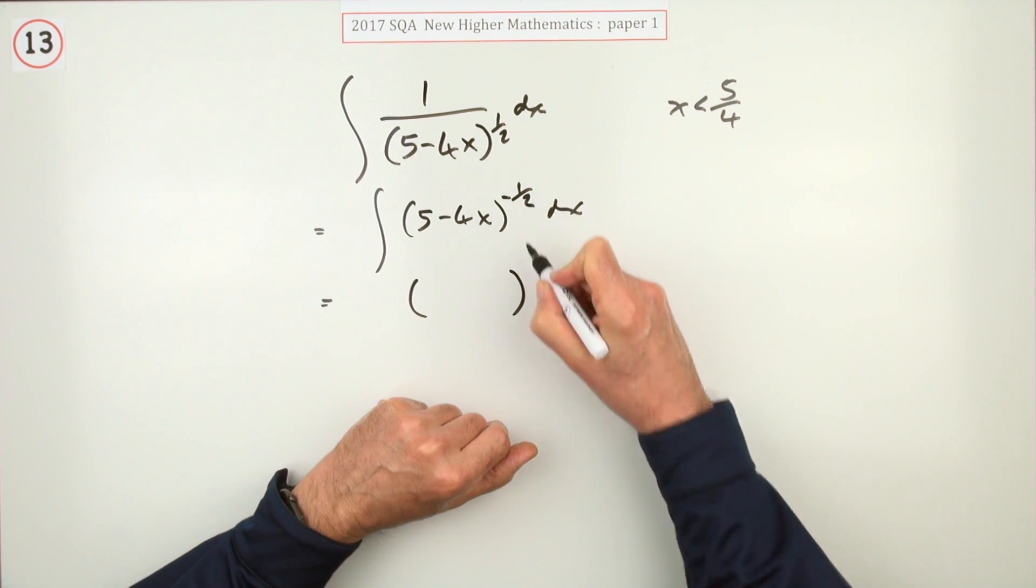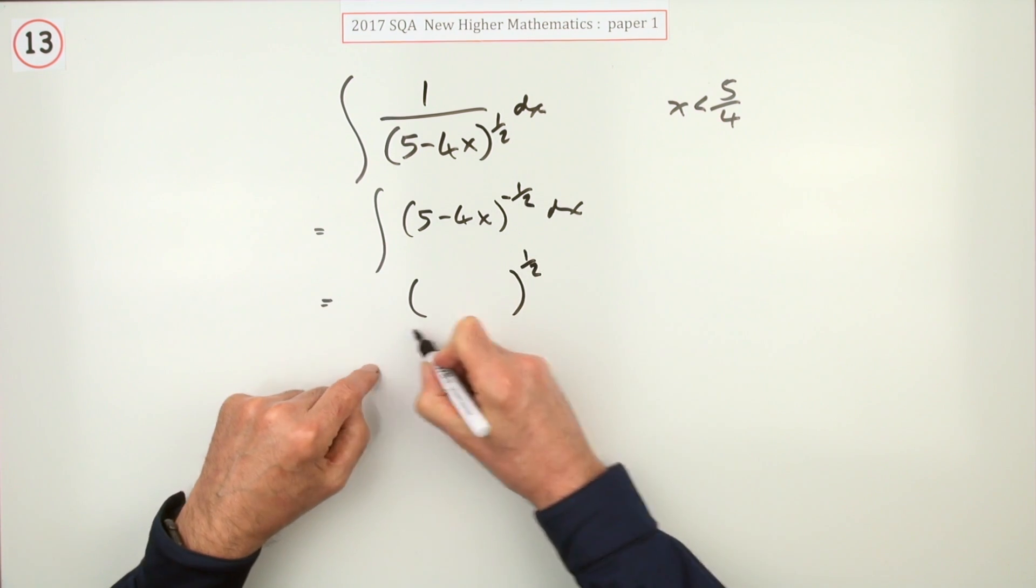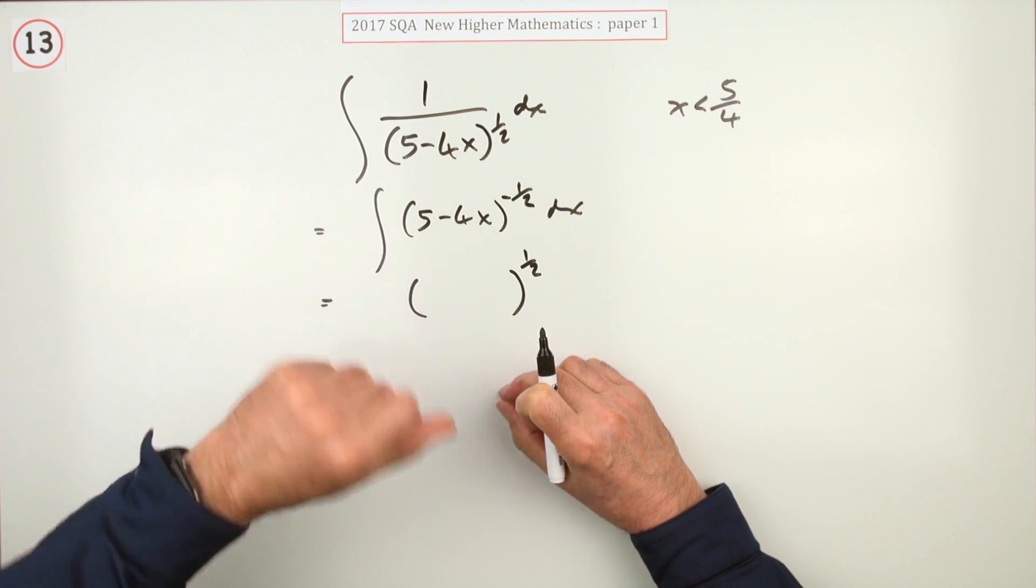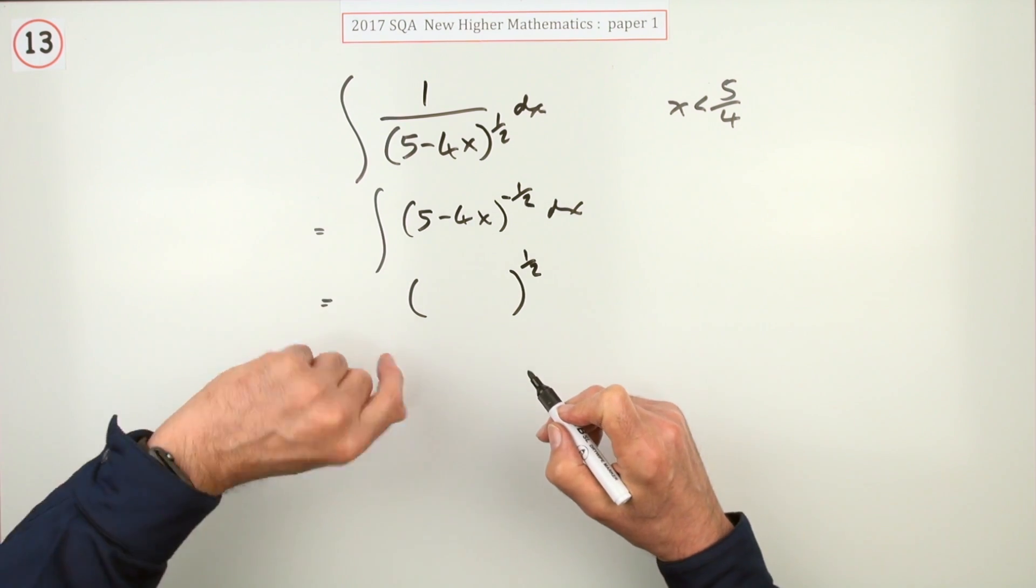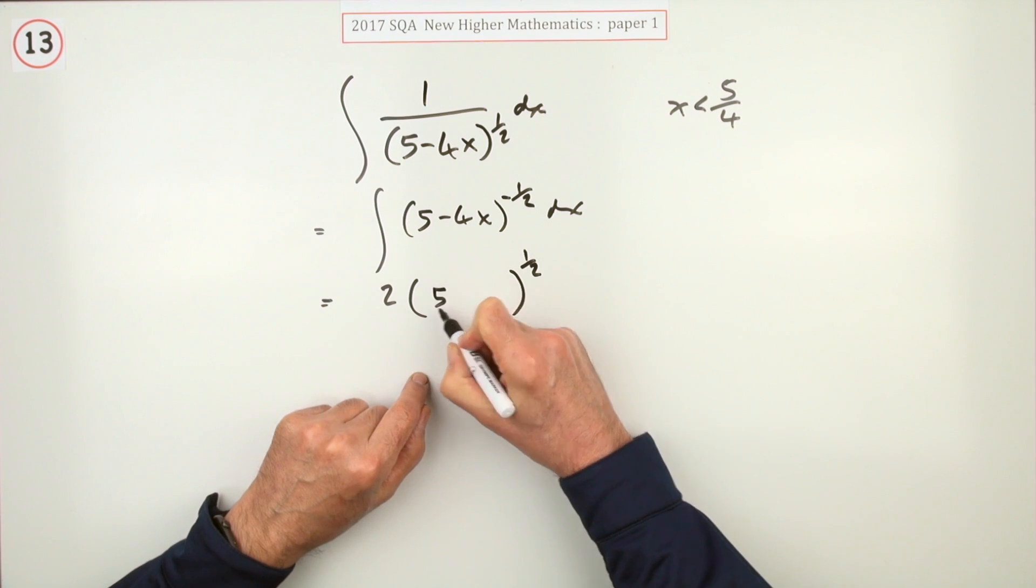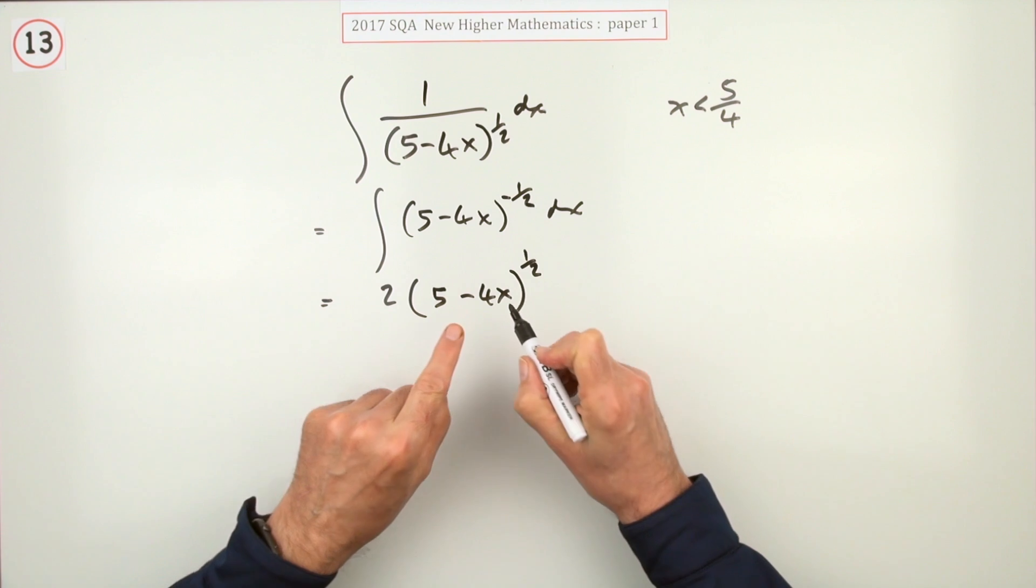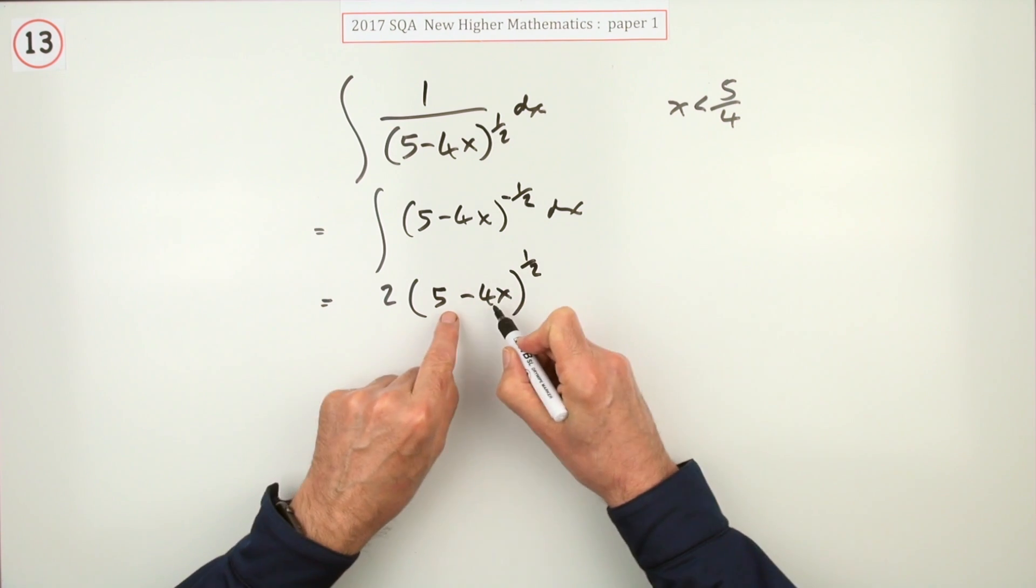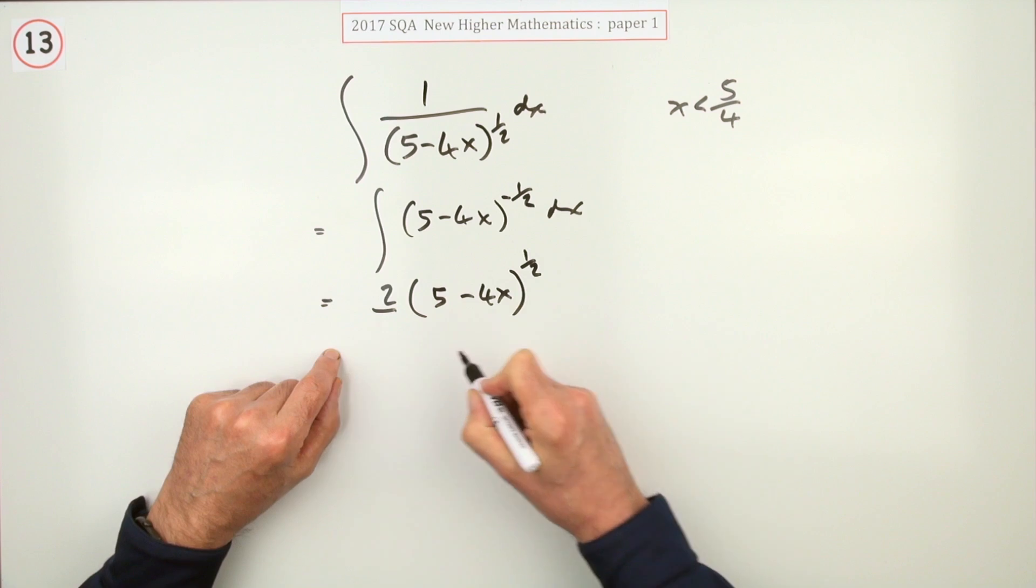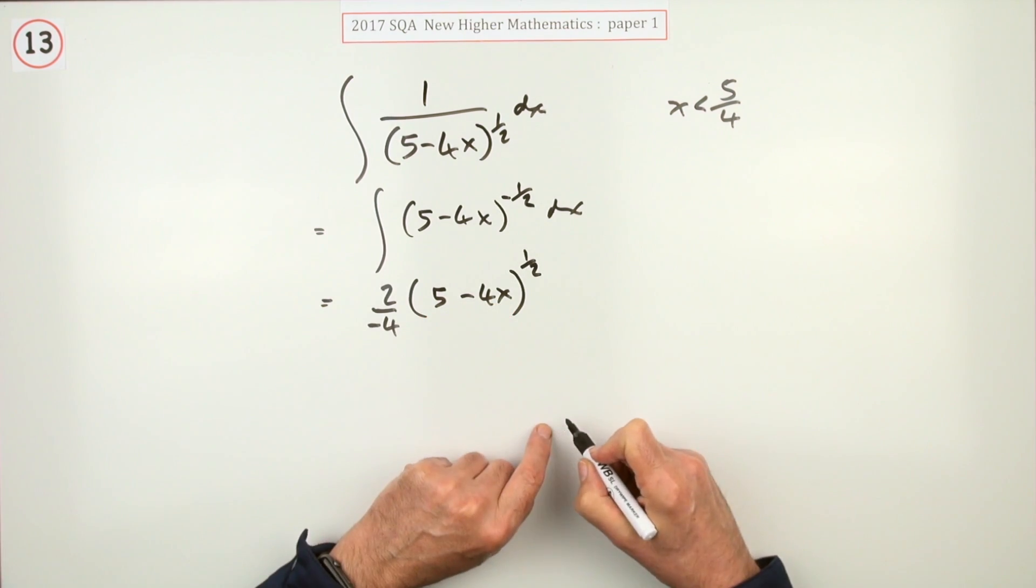Add one to the power, divide by that power. Now you can write over a half if you like, you're better off multiplying by the reciprocal rather than dividing by a fraction. Multiplied by the reciprocal, a half is just two times it. Now what was inside it was a five minus four x. If you were differentiating, you'd have multiplied by the derivative, you'd have multiplied by negative four, whereas here since you're integrating I'm going to do the opposite, which is divide by negative four. And don't forget plus C.